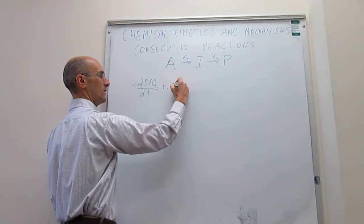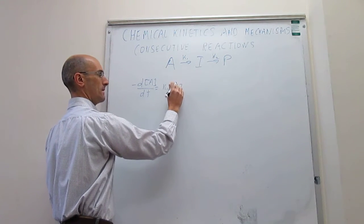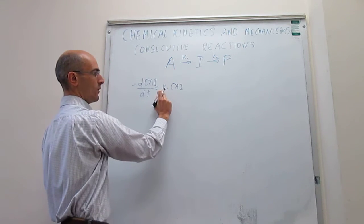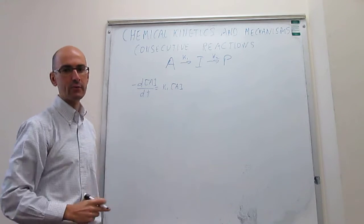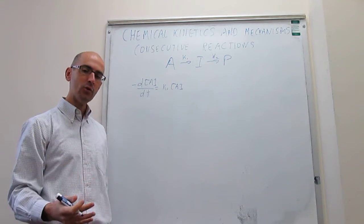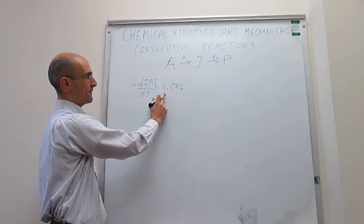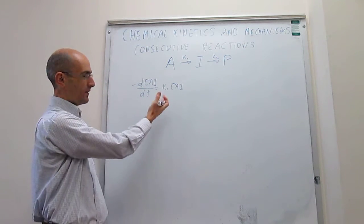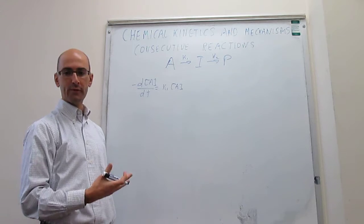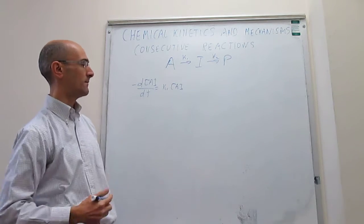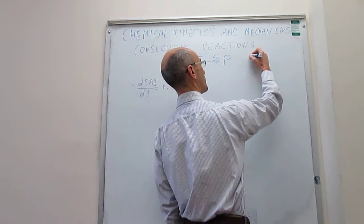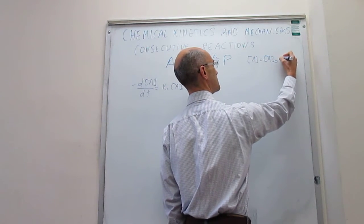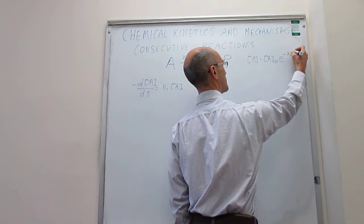We can write the rate law for the reagents simply as d[A]/dt equal to minus K1 times [A]. This is a reaction mechanism, so these are elementary steps. There is only one reaction in which A is involved, and that is A transforming into the intermediate. This is just first order kinetics, and we can write the integrated rate law as: concentration of A equals the initial concentration of A times e to the minus K1·t.